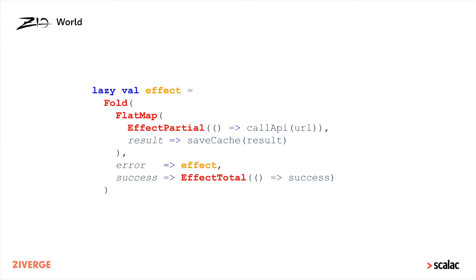The ZIO effect value is actually a tree, modeled with different data structures describing the operations inside the concurrent blueprint. The preceding effect ends up being translated to something like a fold node at the top, inside there a flatMap node, inside the flatMap node an effect partial node, with various functions stored inside this data type. This is a declarative description of what a concurrent effect should do — it doesn't actually do anything, it merely describes it. When you call printLine or query a database, you're building a blueprint; it's a workflow that just describes things.